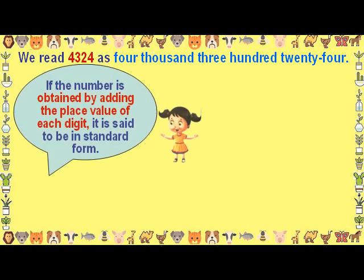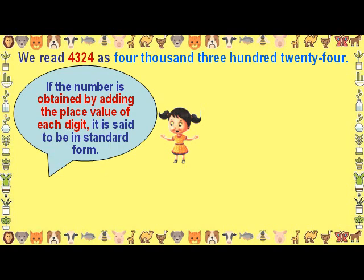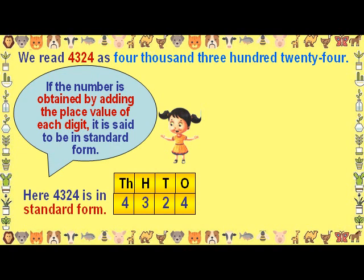If the number is obtained by adding the place value of each digit, it is said to be in standard form. Here 4324 is written in the standard form.